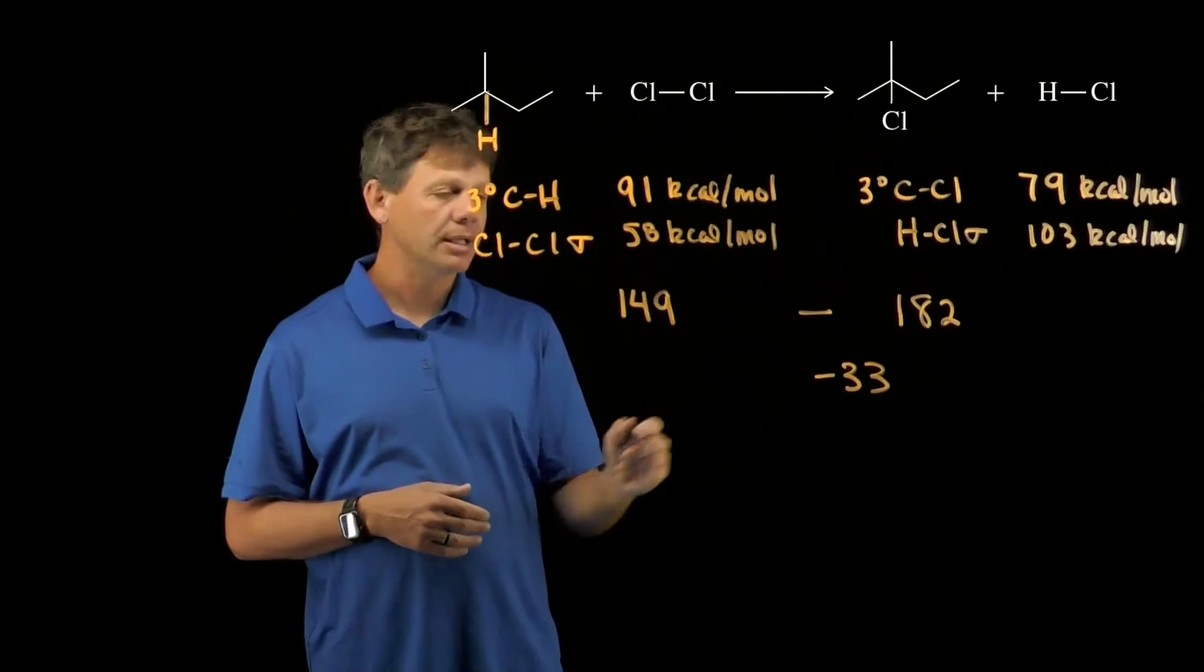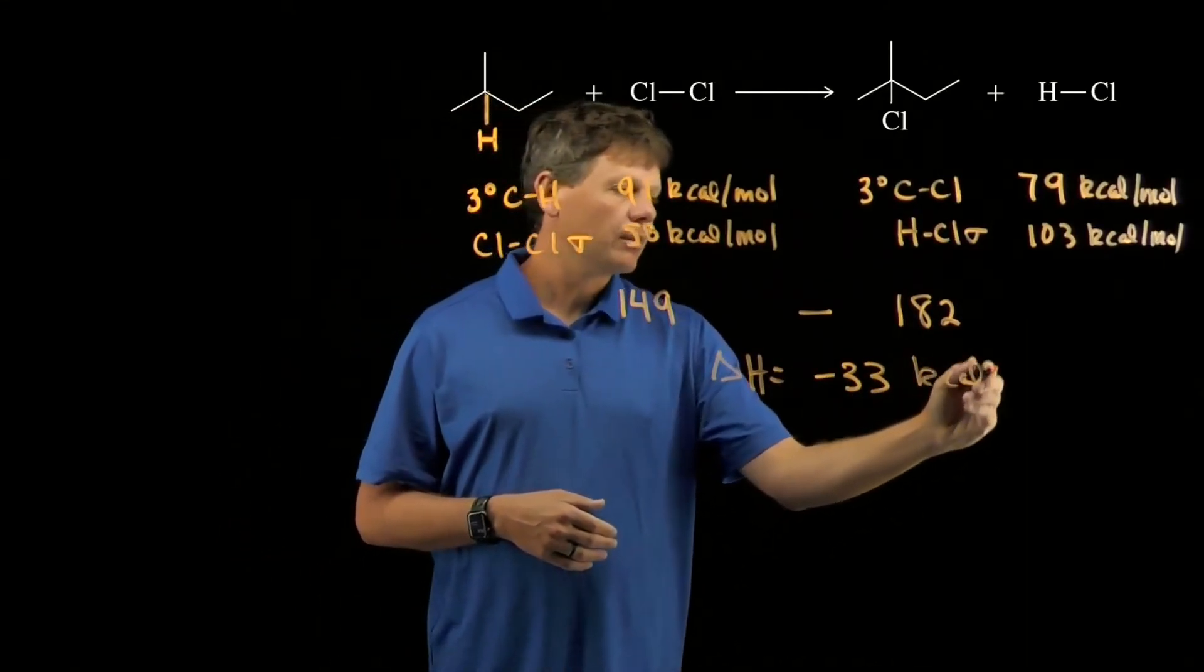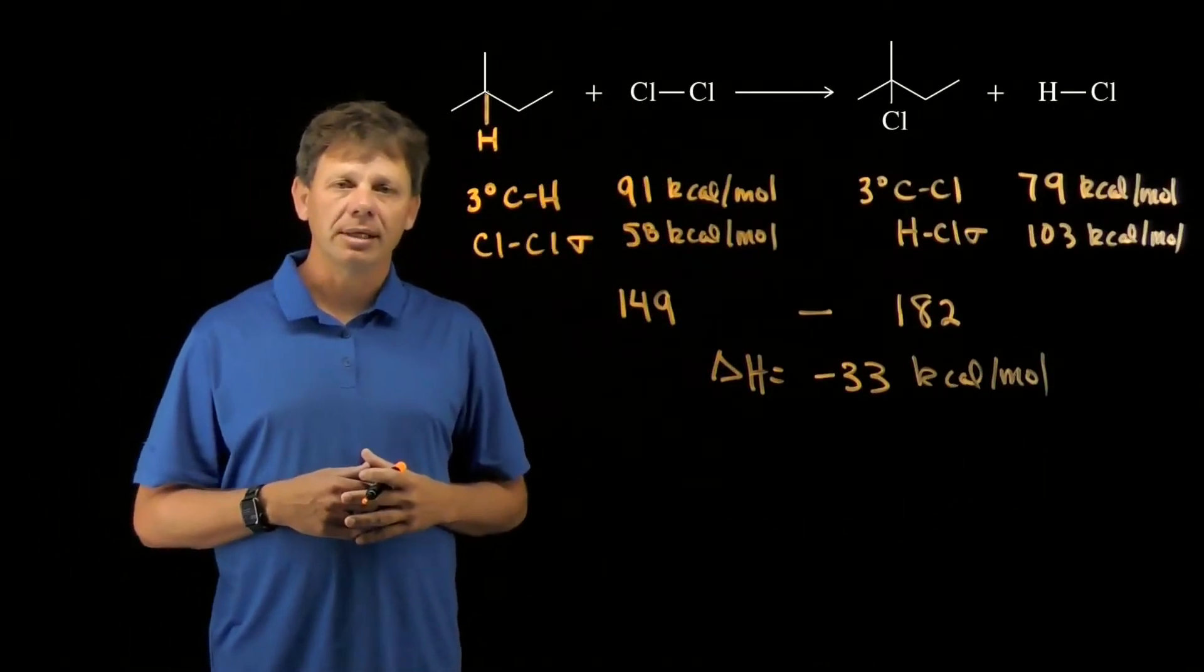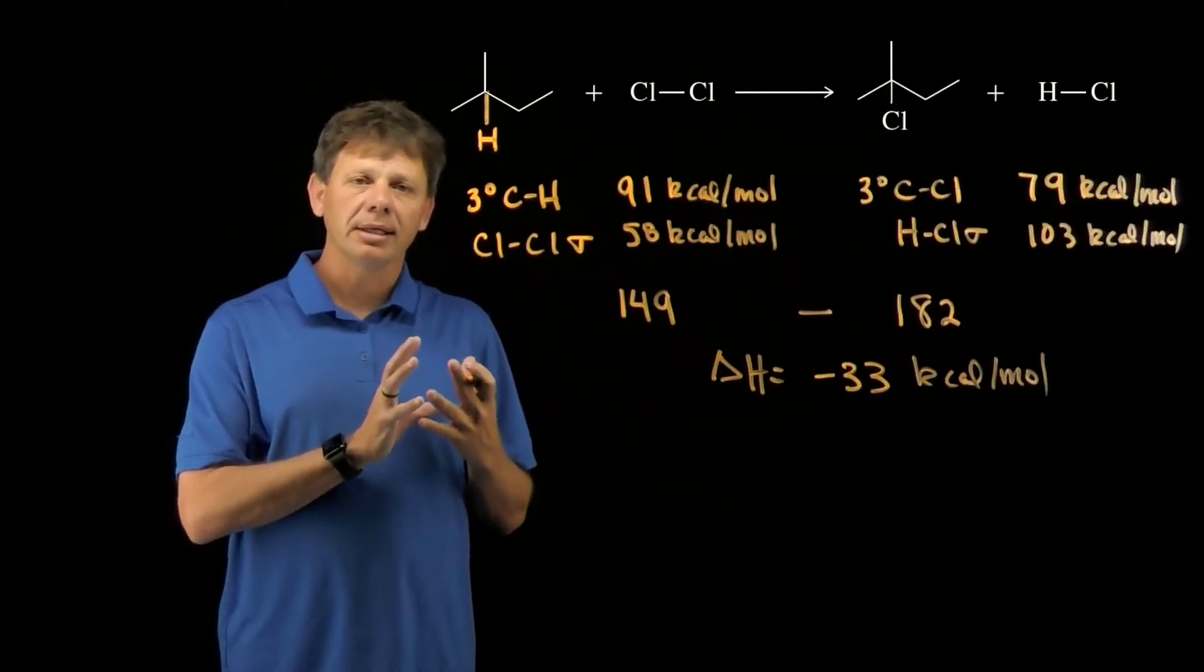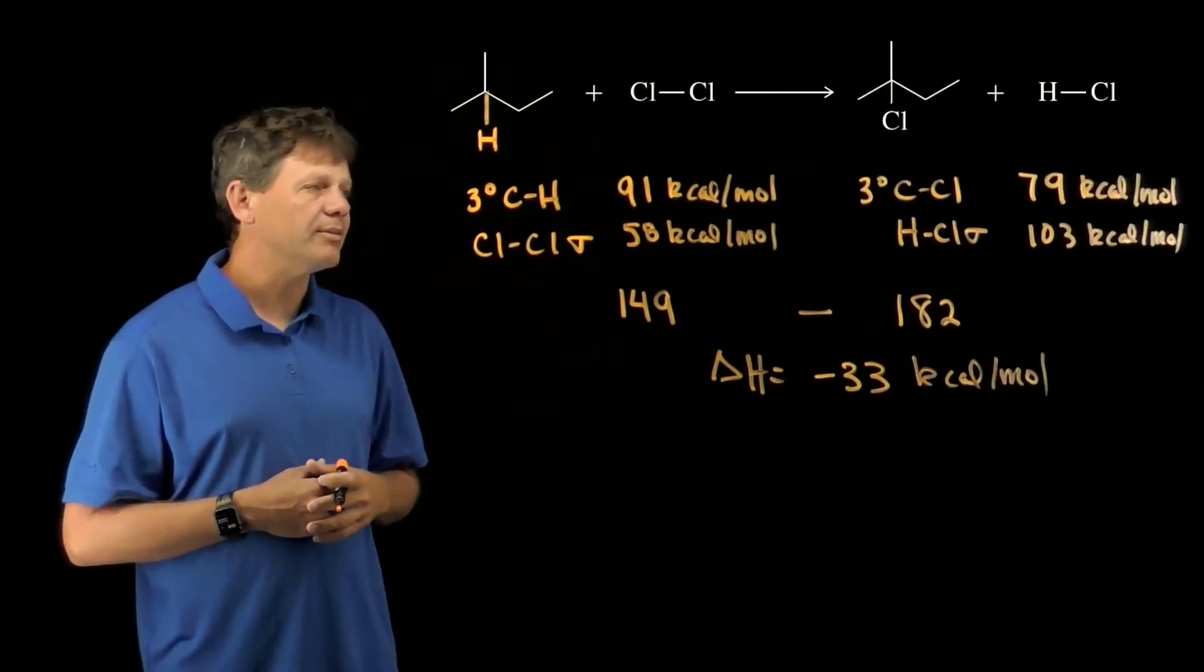This reaction is favored in terms of delta H by negative 33 kilocalories per mole. 33 kilocalories per mole of energy are released in this reaction.